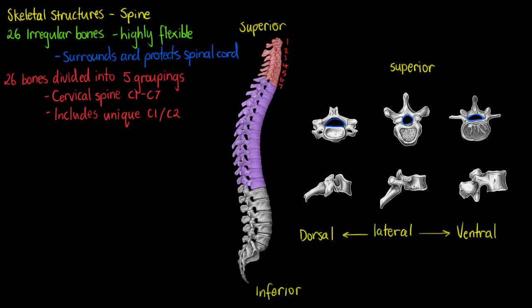The second grouping of vertebrae, below our cervical spine, is our thoracic vertebrae. The thoracic vertebrae are made up of twelve separate components, so T1 to T12, giving us twelve components in that thoracic spine.